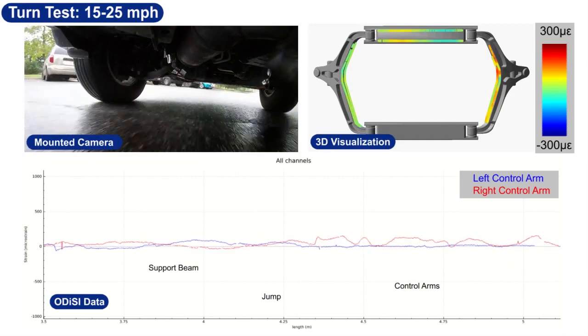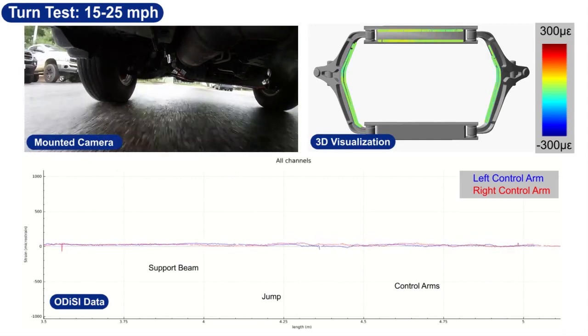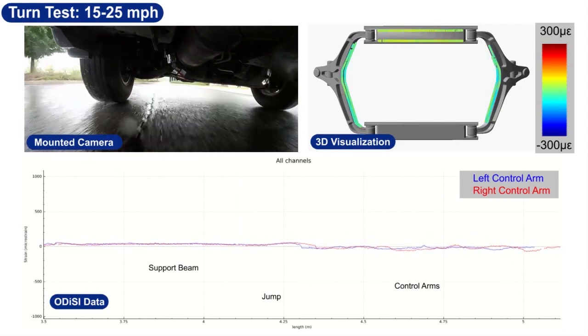A similar shift in load was also apparent in the chassis support member. This tension and compression pattern flipped depending on the direction that the vehicle was turning.